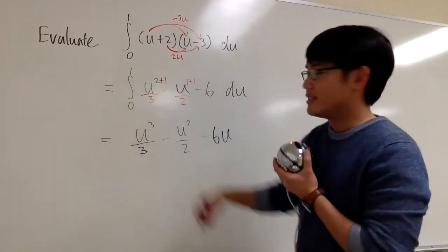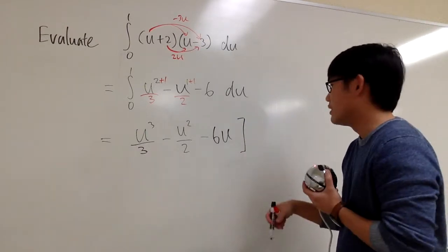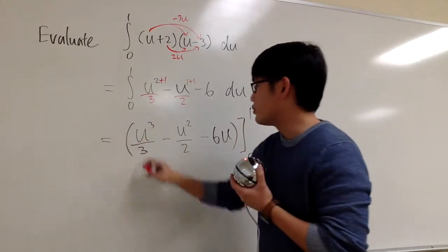And now I have to take care of the numbers. You don't need to worry about the plus c, because the c will cancel out if you subtract each other. So we have from 0 to 1, and this is like the whole expression right here.